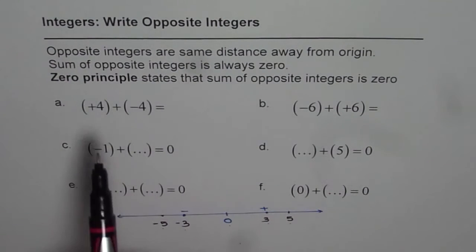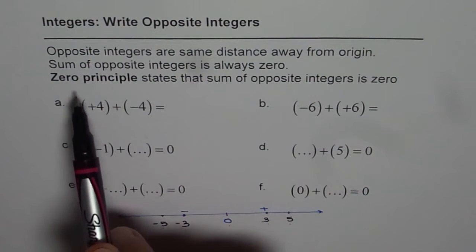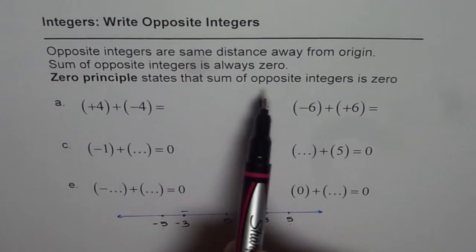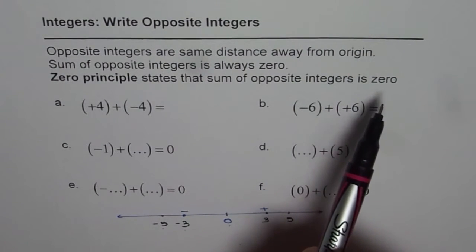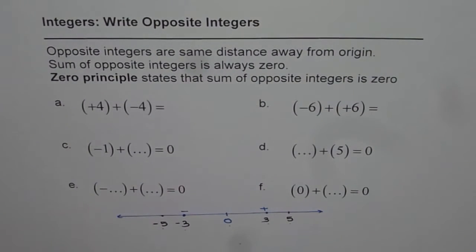Now that leads to 0 principle. 0 principle states that sum of opposite integers is 0. This is very important principle. We are going to use this in adding and subtracting integers in the following videos.